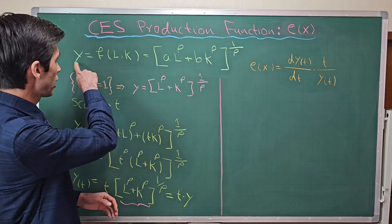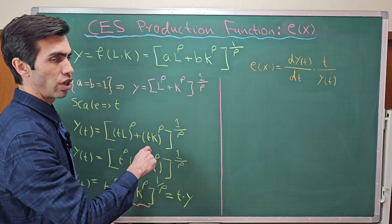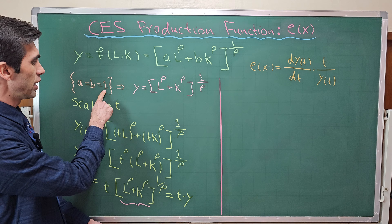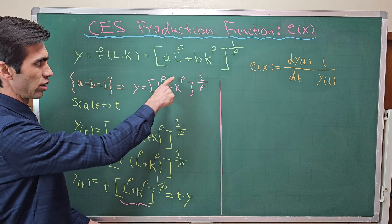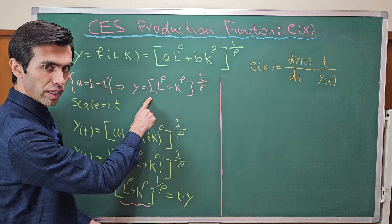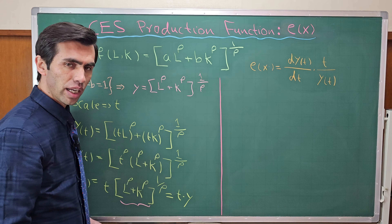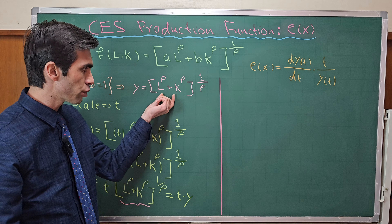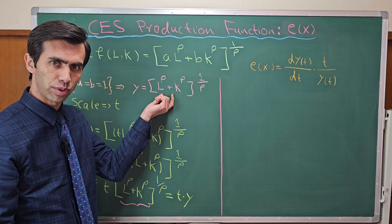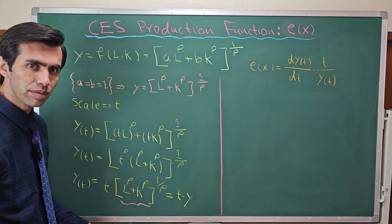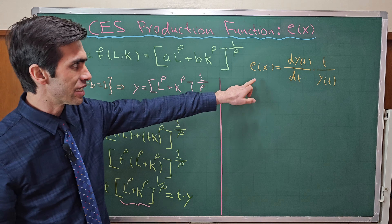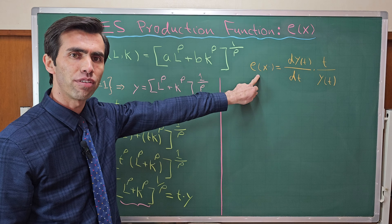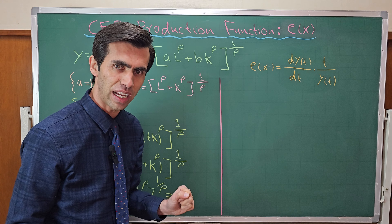The general production function for CES types of production function is equal to this, but we assume that a is equal to b is equal to one, so then this production function changes to this one. Now if we are going to scale all inputs in this simplified version of the production function by t, what will be the elasticity of scale?